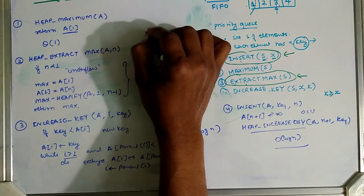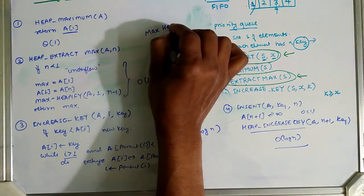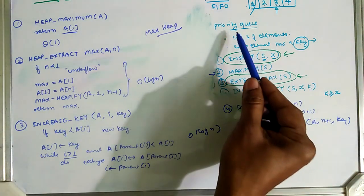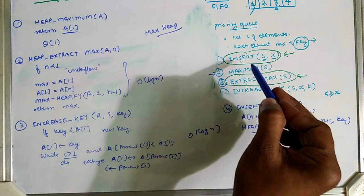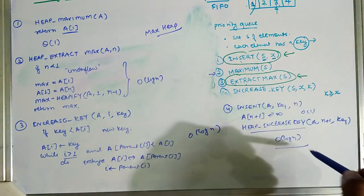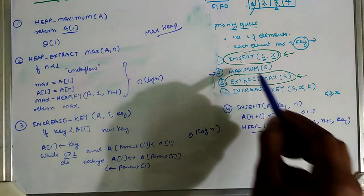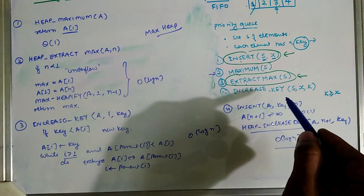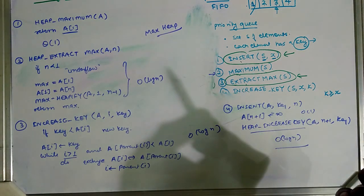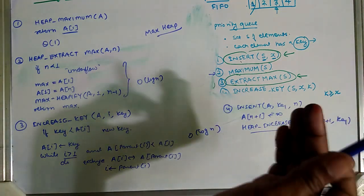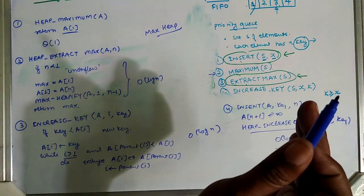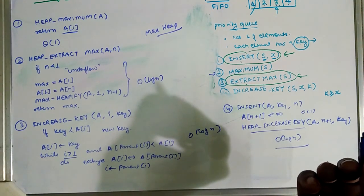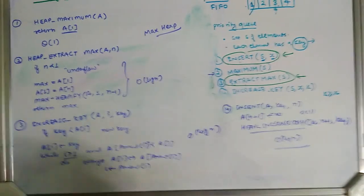To summarize, using max heap we can implement all max priority queue operations: Insert takes O(log n), Maximum takes O(1), Extract Max takes O(log n), and Increase Key takes O(log n). Similarly, we can implement min priority queue operations using the min heap property of the binary heap. Thank you.